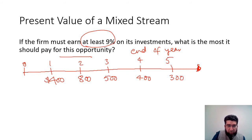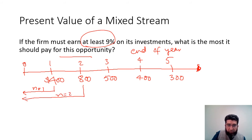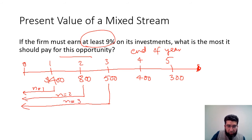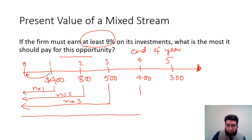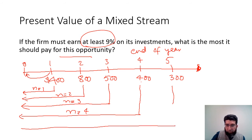We bring each cash flow back to year zero. The first cash flow is discounted with n equals one; the second with n equals two; the third with n equals three. You should remember this is a present value problem, so one time period is discounted per year. The fourth cash flow uses n equals four and the fifth uses n equals five.